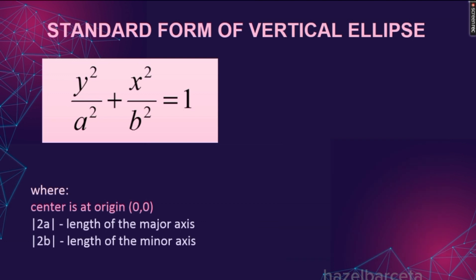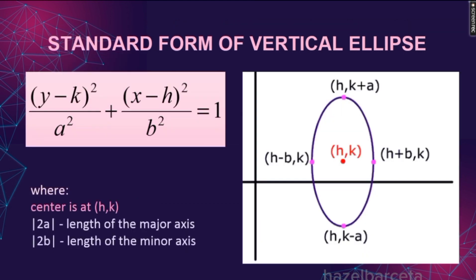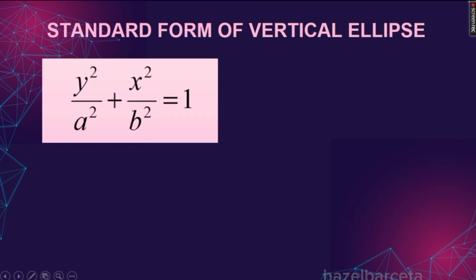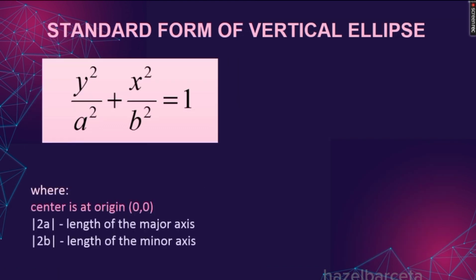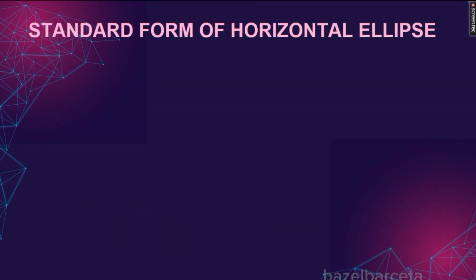Babalikan ko yung naunang formula. Kapag ang center natin is at the origin, 0, 0, automatic i-substitute natin dito si 0, 0, at makukuha na natin y²/A² + x²/B². Ang mai-advise ko ay ang center at HK na lang ang kabisaduhin para hindi na madami ang ating inibisip. So we're done with vertical ellipse, let's go to the horizontal ellipse.